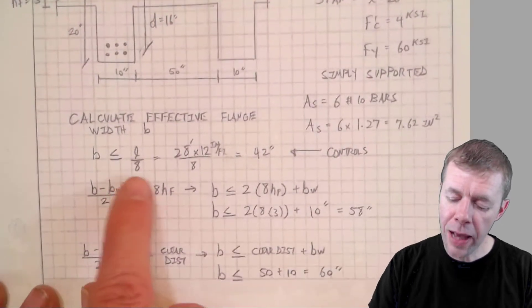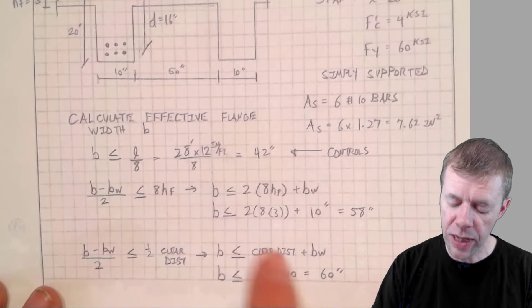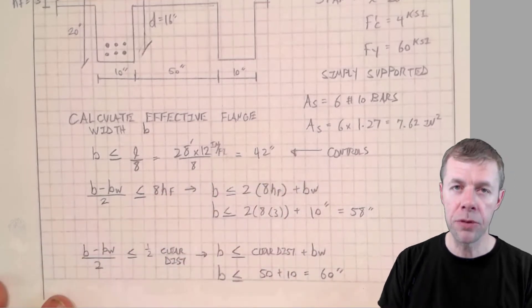So I'm gonna take my span length, 28 feet multiplied by 12 divided by 8 and I get 42 inches. That's one of them. And I do this check two different times.